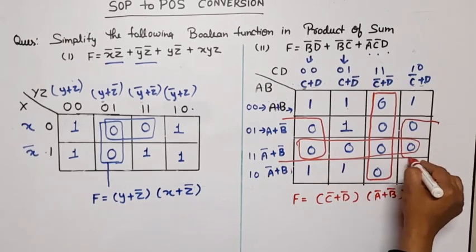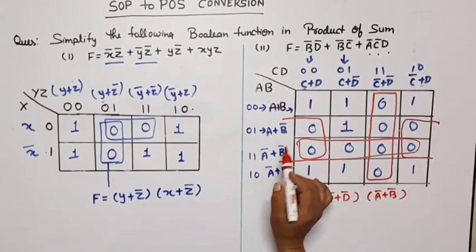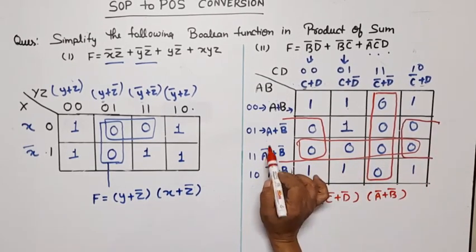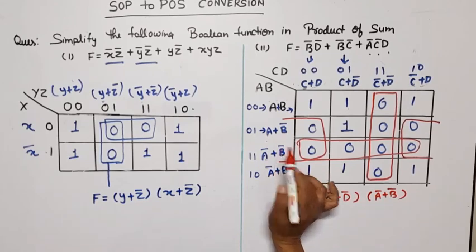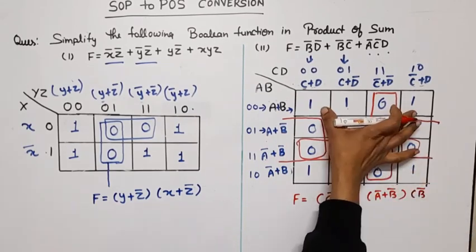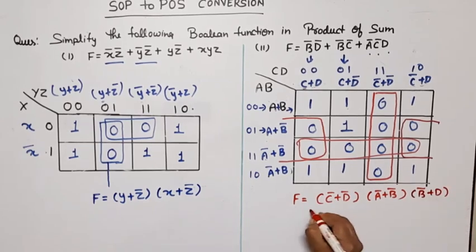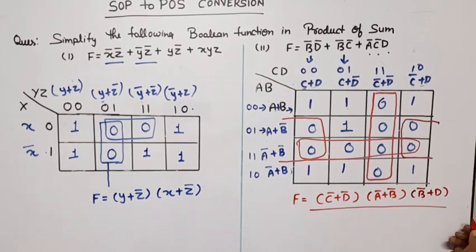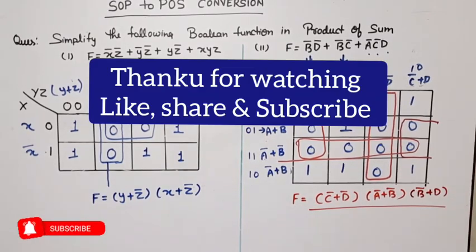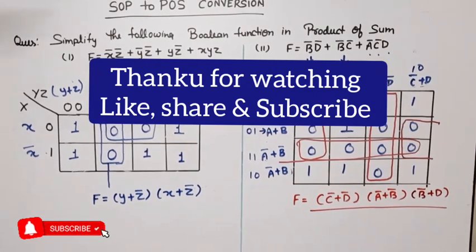This back-to-back connected quad: from these two rows, the common variable is b̄; from these two columns, the common variable is d. So the final simplified POS expression for the four-variable function is f = (c̄+d̄)(ā+b̄)(b̄+d). Thank you so much — if you have any doubts, write in the comment section.